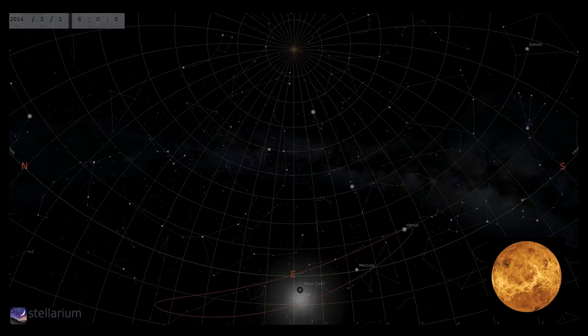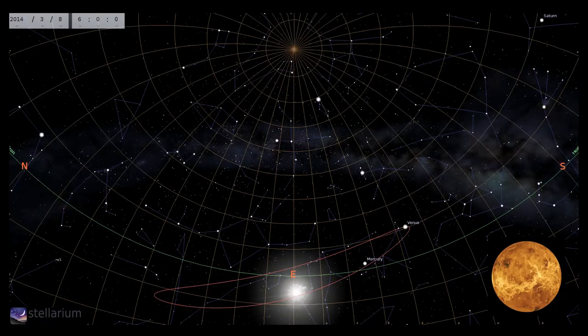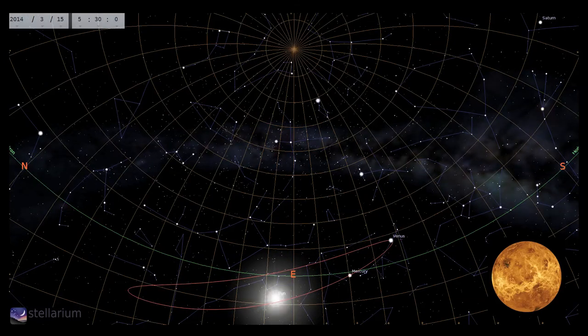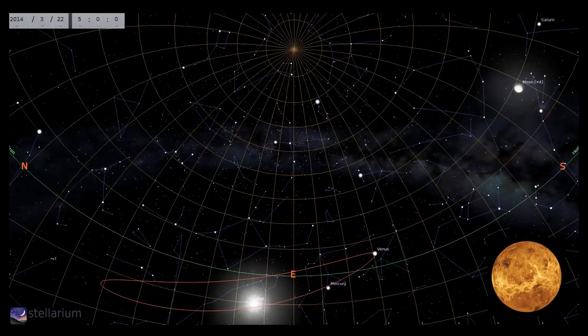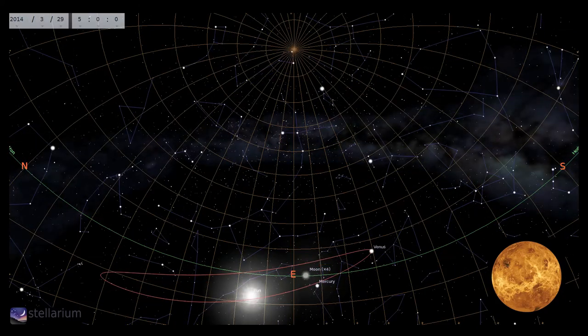Venus plays the part of the morning star this month, and will be blazing away in the east in the hours before dawn. It will reach its greatest western elongation on the 22nd. Not always a great deal to see with Venus, though worth trying with a few color filters to tease out any cloud detail. Dark blue is a good bet.